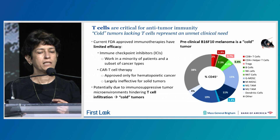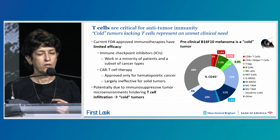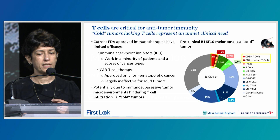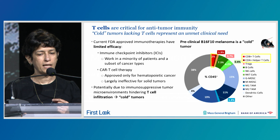The B16 melanoma model in mice mimics a cold human tumor where less than 44% of the total leukocyte infiltrate are effector T-cells. This model is largely resistant to immune checkpoint inhibitors and is the model that we use for our studies.